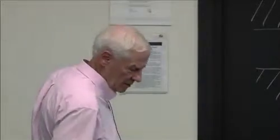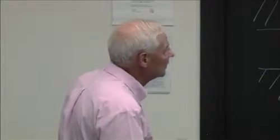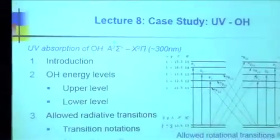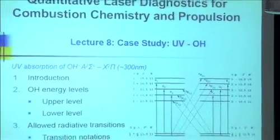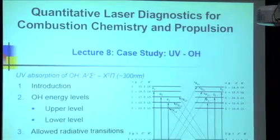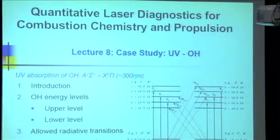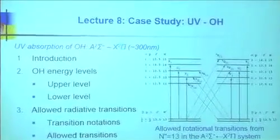We'll go through one example, and it's in your notes so you'll have access to it if you'd like to give it more time. This is for UV absorption of OH in the X²π to A²Σ band — absorption transitions between X and A at around 300 nanometers in the UV. We've already learned that OH is an X²π state.